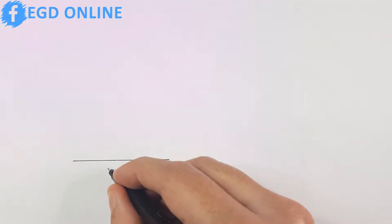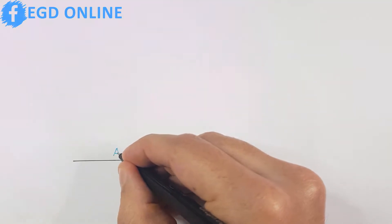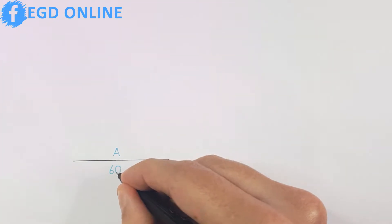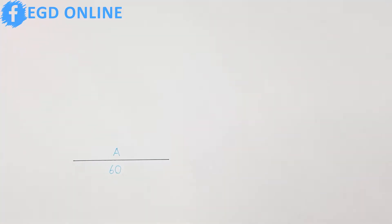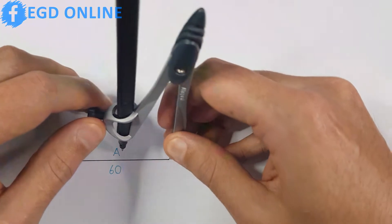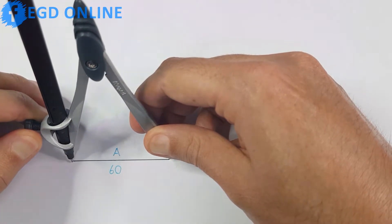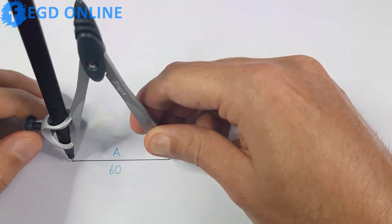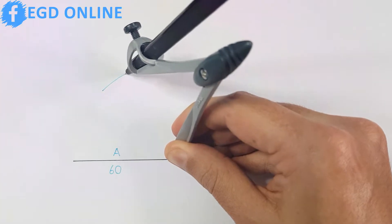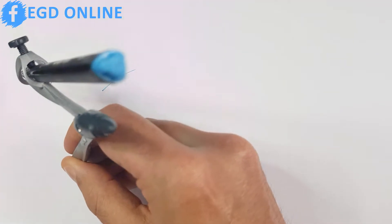My triangle will have a side length of 60. I will go ahead and label my first side as A and the measurement of 60. Next, take your compass and place it on one end of your side and adjust it to the full length of your side. Draw an arc above side A, but remember to do this on both ends of side A.